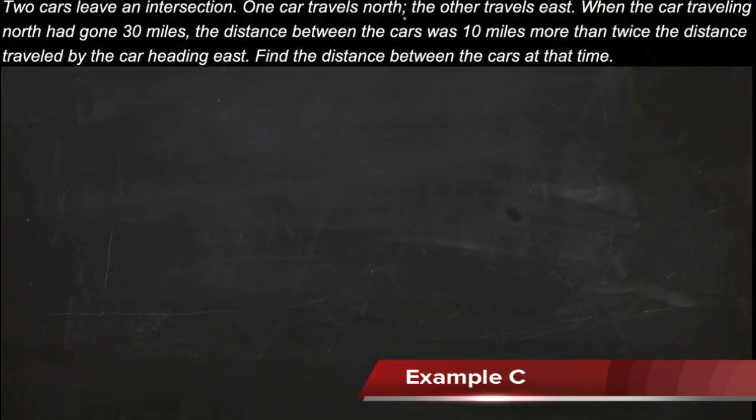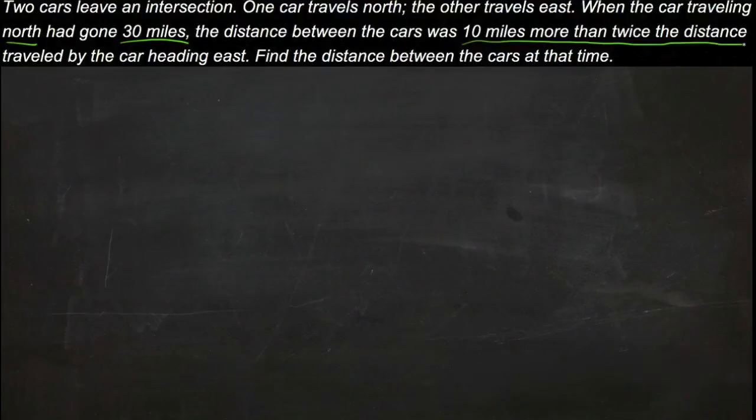One car travels north, the other car travels east. When the car traveling north has gone 30 miles, the distance between the cars was 10 miles more than twice the distance traveled by the car heading east. Find the distance between the cars at that time.